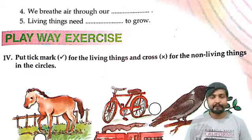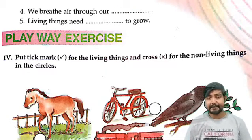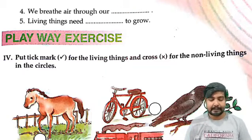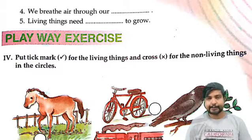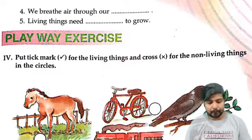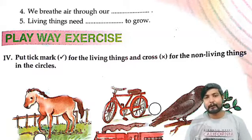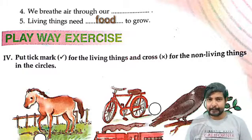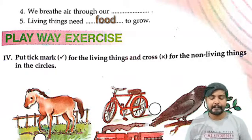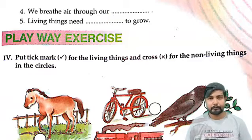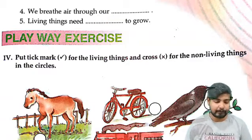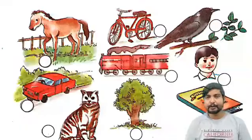Number 5: Living things need dash to grow. Living things ko grow karne ke liye kya chahiye? Food. Living things need food to grow. So number 5 answer is food.